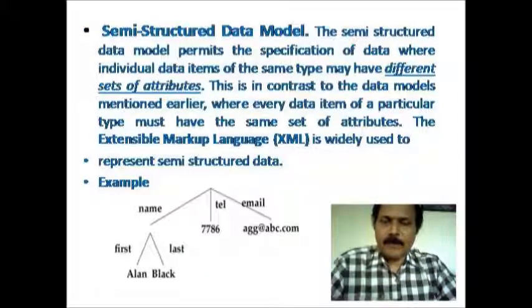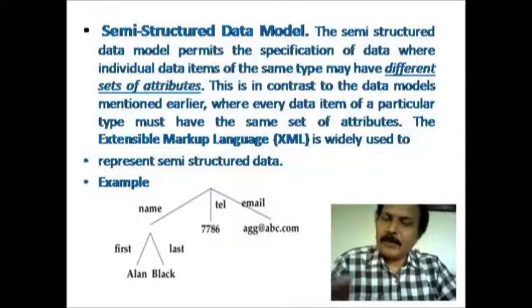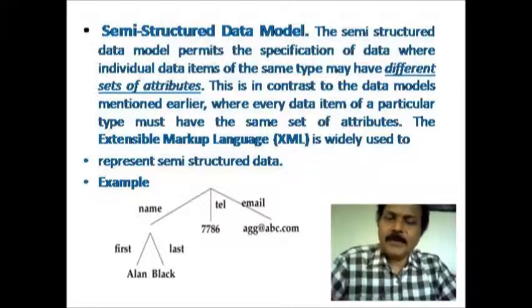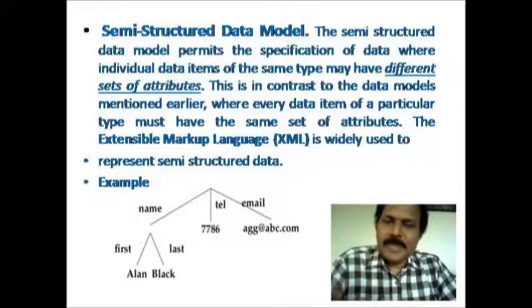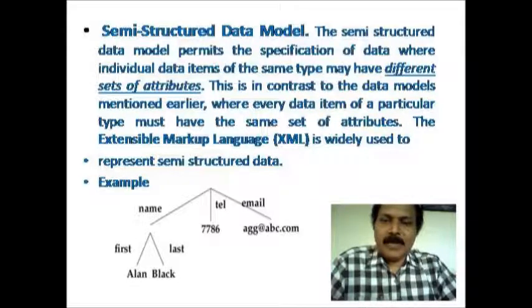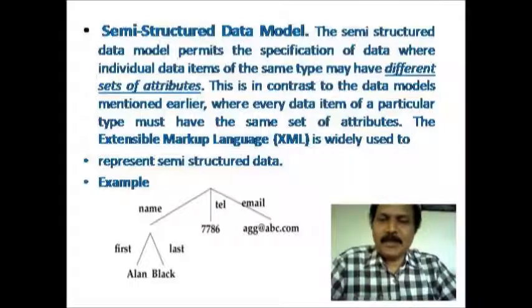Semi-structured data model. And coming to this, the different records will be having different attributes. In general, in other models, all the records will be comprising the same attributes. But here, it varies. Some records will have some attributes and some other records will be having different attributes. And to show this variation, we go with the semi-structured data model. The different sets with different attributes, XML that is extensible markup language is the best example to depict the semi-structured data model.